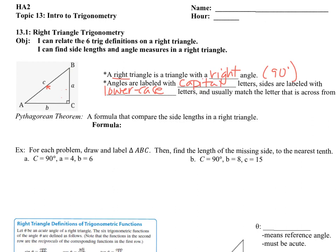A way to compare side lengths in a right triangle is something called the Pythagorean Theorem. You may remember this formula from geometry. If you have two sides and you're trying to find the length of a missing third side, the template is always a squared plus b squared equals c squared, where c is always the hypotenuse and it's always on its own on that right-hand side. The hypotenuse is that diagonal side length opposite the 90-degree angle.